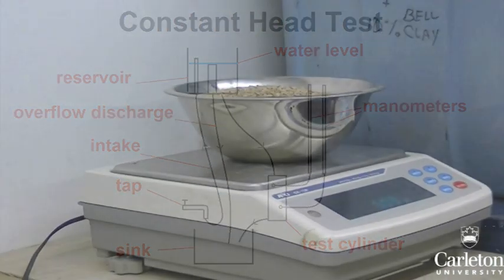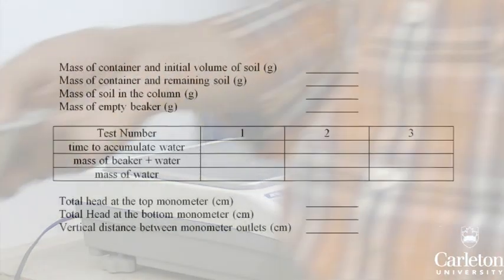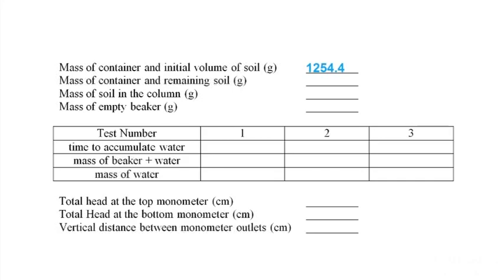First obtain about 1 kg of coarse soil and place it in a container. This should be enough to fill the test cylinder. Record the mass of the container plus the soil in a table.